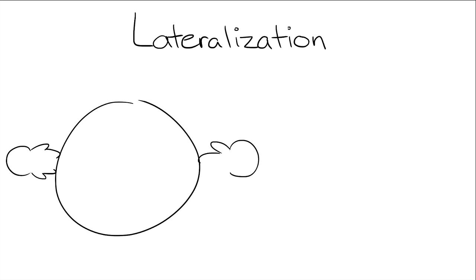Why do we have a dominant side? Lateralization. This refers to some brain functions taking place in one hemisphere, or one side, rather than the other.